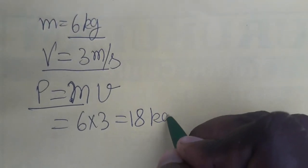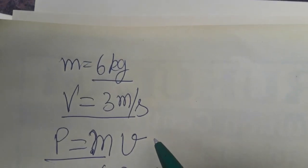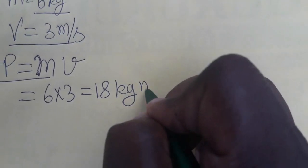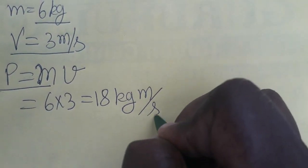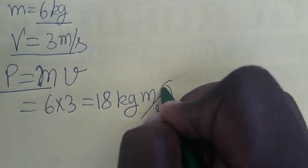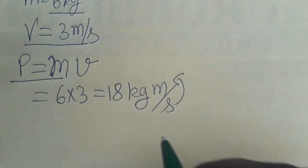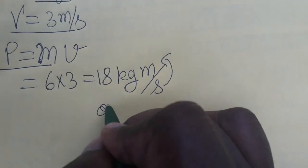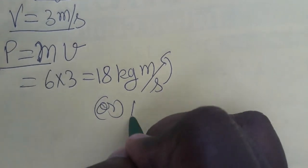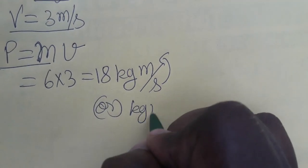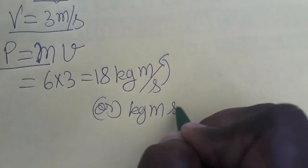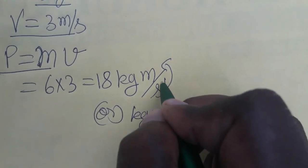What about the unit? Mass has a unit of kg, velocity has a unit of meter per second. Taking the second from the denominator to the numerator, you can write it as kg meter second to the power minus 1.